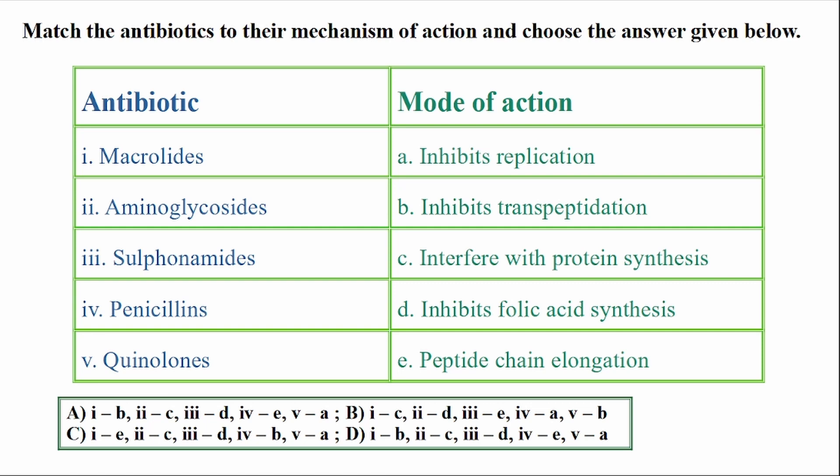5 - Quinolones. The modes of action are: A - Inhibits replication, B - Inhibits transpeptidation, C - Interfere with protein synthesis, D - Inhibits folic acid synthesis, E - Peptide elongation block.